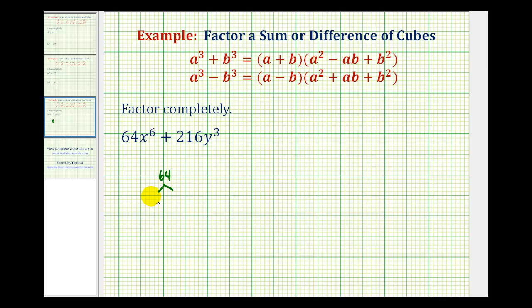So for 64, we can break this down into 8 times 8, and then 8 equals 4 times 2, where 2 is prime, and 4 is 2 times 2. So the prime factorization of 64 is going to be 6 factors of 2.